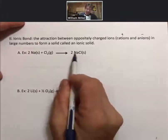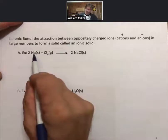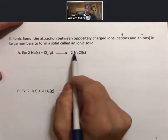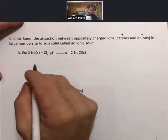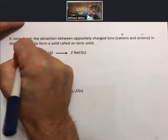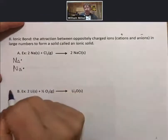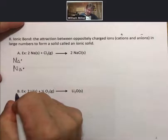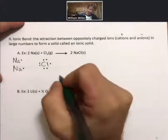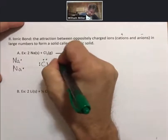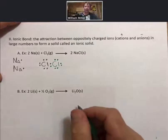A reaction that forms an ionic solid involves two sodium atoms and one chlorine molecule forming two formula units of sodium chloride solid. If we draw Lewis dot formulas for the atoms, we have two sodium atoms and we have chlorine, which has a covalent bond. I'm going to draw all the electrons as dots so that we can see them. Here is one of the chlorines, and I'm going to draw the other chlorine in green, so you can see it's seven electrons. The electrons are indistinguishable, because an electron is an electron.